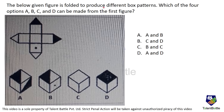The figure below is folded to produce different box patterns. Which of options A, B, C, and D can be made from the first figure? When you combine this figure, certain faces come together. I will number them 1, 2, 3, and 4. Only half part of each square - a triangle - is dark, so only two small dark triangles will appear on any one face.